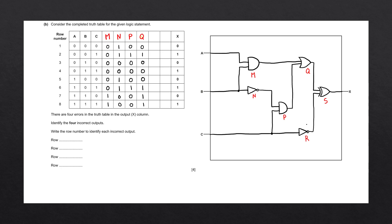The next logic gate is R, which is a NOT gate with input C. As before, the condition is that it inverts the input: 0 becomes 1, 1 becomes 0. Starting with row 1, C is 0, so R is 1. Row 2, C is 1, so we write 0. The pattern repeats — C column is 0, 1, 0, 1, 0, 1, 0, 1 — so R is 1, 0, 1, 0, 1, 0, 1, 0.